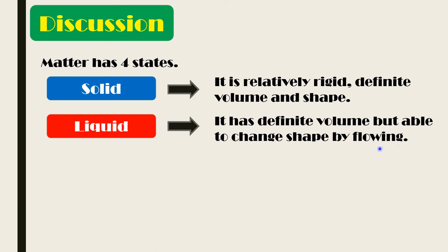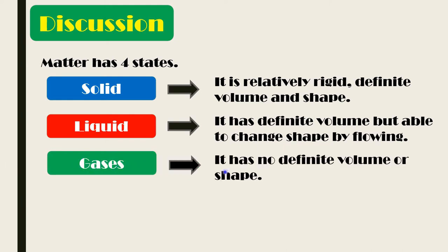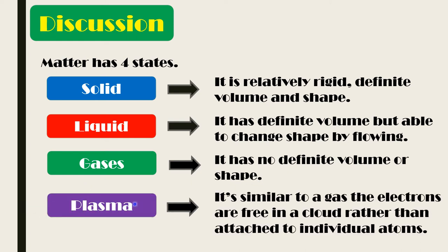The next state is liquid, which has a definite volume but is able to change shape by flowing. Examples include alcohol, coffee, vinegar, soy sauce, water, and oil. After liquid, we have gas — gas has no definite volume or shape. Examples include helium, hydrogen, and oxygen, the air that we breathe.